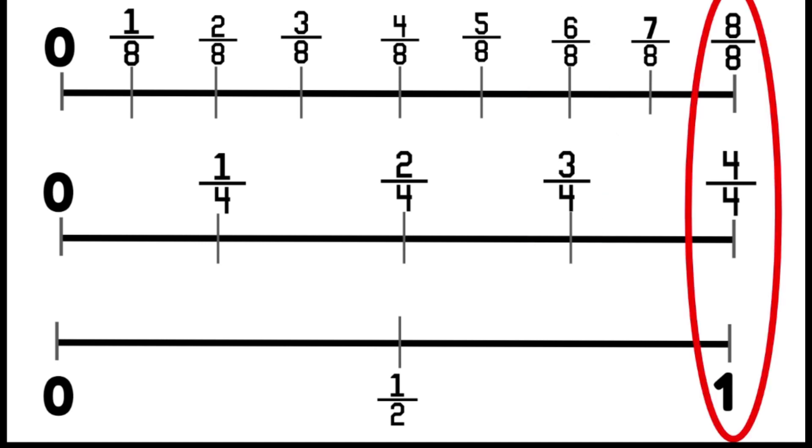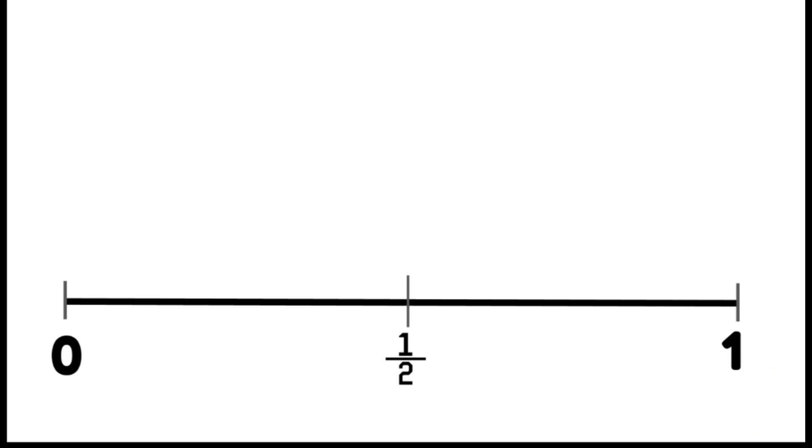We can also say that eight over eight and four over four are a value the same as one and are equivalent to each other. The next step is to combine all three number lines into one number line.